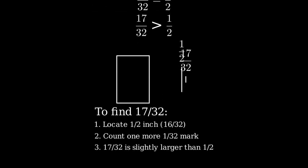To summarize, to find 17/32nds, first locate the half-inch mark at 16/32nds, then count one more 32nd mark to the right.